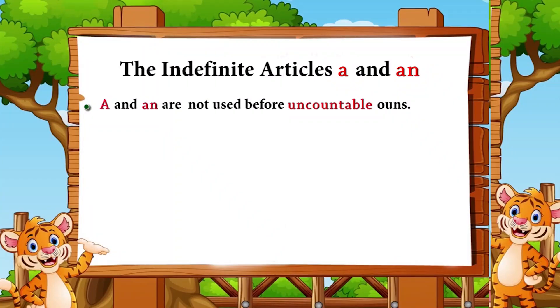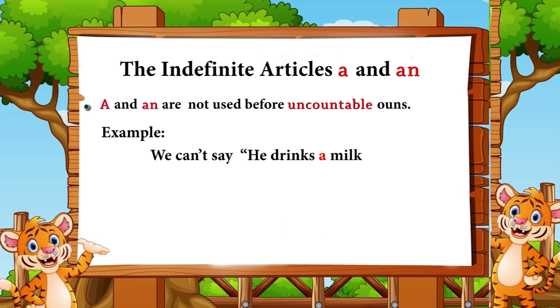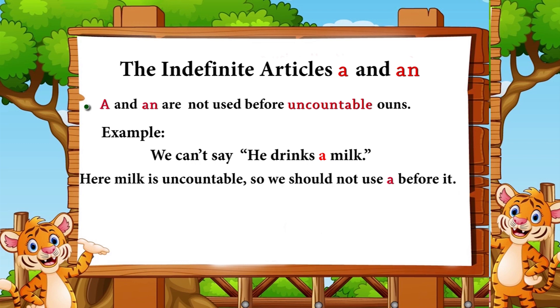'A' and 'an' are not used before uncountable nouns. Example: we can't say 'he drinks a milk' because milk is uncountable. But we can say 'he drinks milk.'